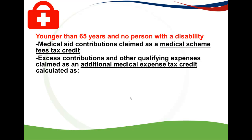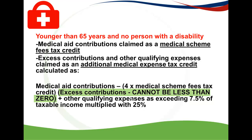To calculate the AMETC, first calculate your excess contributions: Medical Aid Contributions less four times your Medical Schemes Fees Tax Credit. This excess can never be less than zero — it must always be a positive figure. To that, add your other qualifying expenses. If this total exceeds 7.5% of your taxable income, multiply the difference by 25%. If it does not exceed 7.5% of taxable income, you get no Additional Medical Expense Tax Credit.